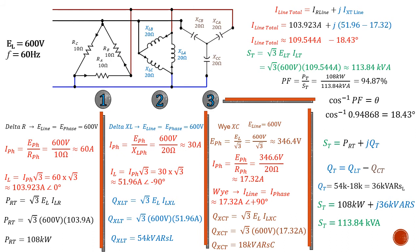It's encouraged that you calculate your power two different ways, just as we did in single phase: by taking your total voltage and total current using root 3 times E-line times I-line to get total apparent power, and then vector summing your powers to confirm you get the same answer, within a margin of rounding.